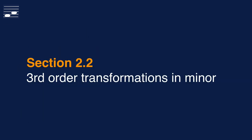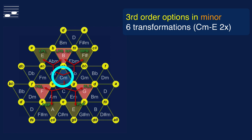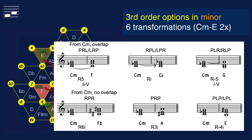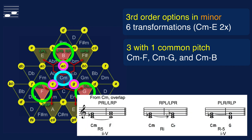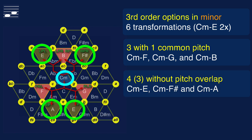You should by now be familiar with the analysis approach, and we can move quicker when considering the options from a minor triad as starting chord. Again, the total set includes 6 options when taking into account the double occurrence of E major in the Tonetz. In the overview in staff notation, the three common-pitch options are at the top and the non-overlapping third-order transformations at the bottom. The single common-pitch options go from C minor to either B, F or G major, with the non-overlapping options leading to the major chords on roots E, F sharp and A.